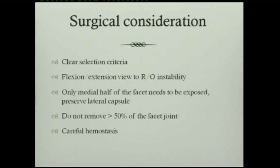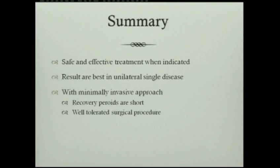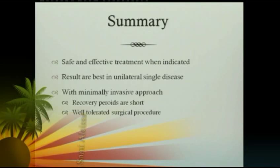In summary, always apply clear selection criteria and perform flexion-extension views pre-operatively to rule out instability. Expose only the medial half of the facet, preserve the lateral facet capsule, and avoid resecting more than 50% of the facet joint. Posterior foraminotomy is safe and effective when correctly indicated — results are best at unilateral single-level disease with minimally invasive approaches, recovery periods are short, and it is a very well-tolerated surgical procedure.